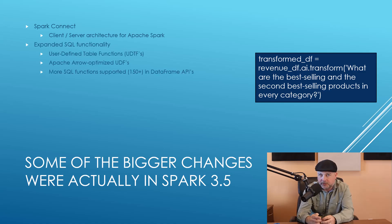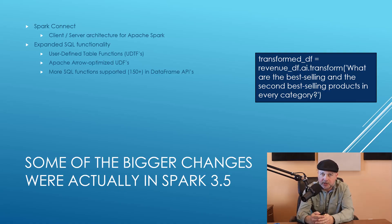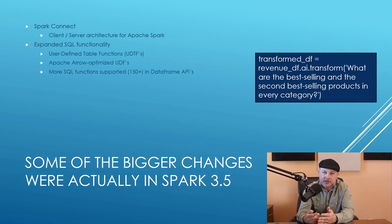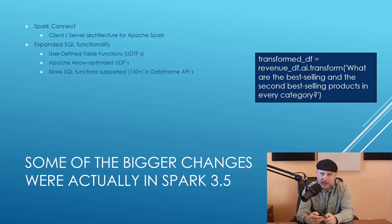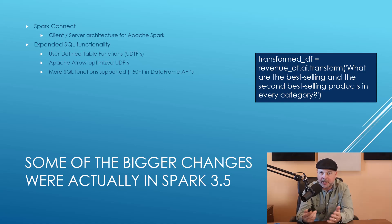They've also expanded SQL functionality in Spark 3.5, including what they call user-defined table functions. We have a whole lecture on that with a hands-on activity later on. At a high level, it's a way of expanding rows into multiple rows from Spark SQL — extracting multiple rows of information from one. They've also added Apache Arrow-optimized UDFs — user-defined functions within SQL — making it much more efficient to have custom processing logic embedded in your SQL commands for distributing processing across a cluster.